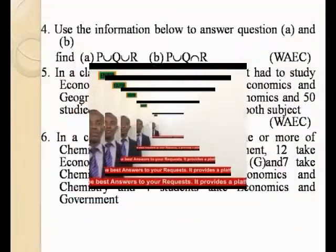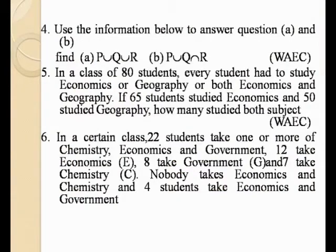Example number 4: use the information below to answer questions A and B. The elements of set P are 2, 1, 3, 9, and ½. Set Q is equal to 1, 2½, 3, and 7. Set R is equal to 5, 4, and 2½. We are asked to find P∪Q∪R, and then P∪Q intersected with R.